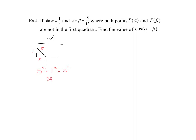Because we are in the second quadrant, x is negative. Even though a triangle side length is positive, in terms of our quadrant position, x = −√24. Therefore, cos α = −√24 over 5.